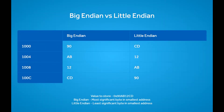Let's talk about big endian versus little endian format when storing values on the ARM Cortex-M processor. If our value to store is 0x90AB12CD, then in the big endian format the most significant byte is stored in the smallest address. So 90 goes in address 1000, AB goes in the next address, and 12 goes in the next address.